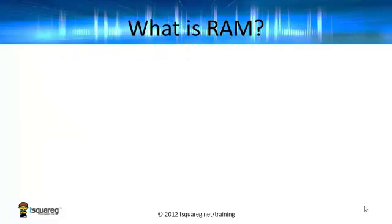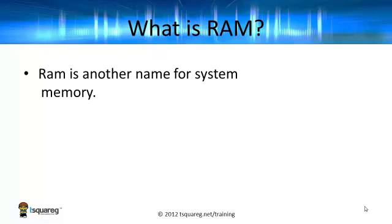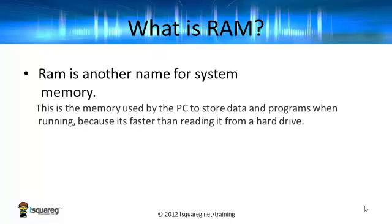Our first question, a very important one, is what is RAM? It actually stands for something. RAM is another name for system memory. It is, of course, random access memory. This is the memory used by the PC to store data and programs when running, because it's faster than reading it from a hard drive.